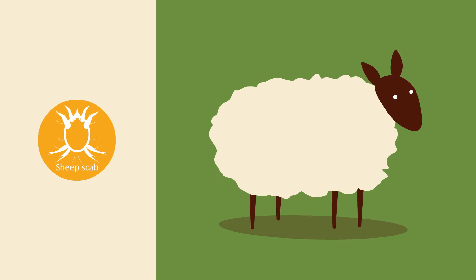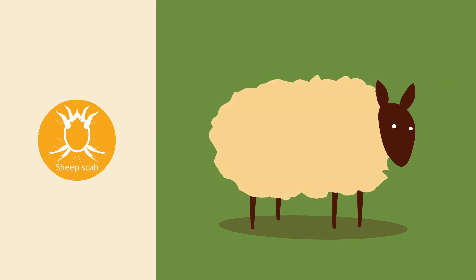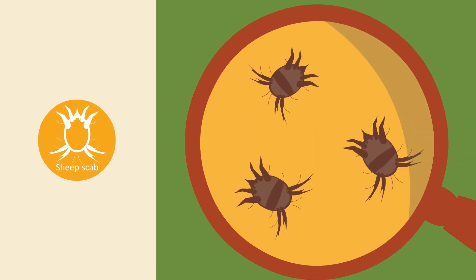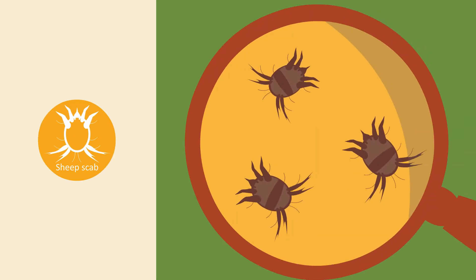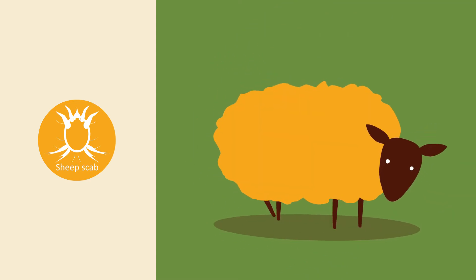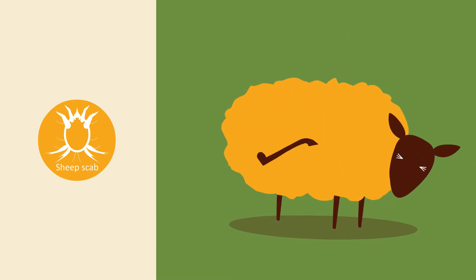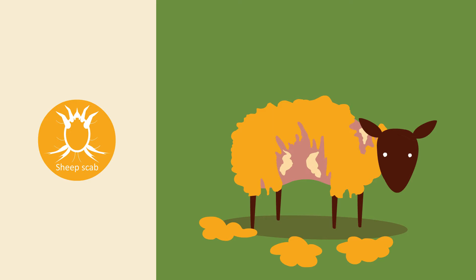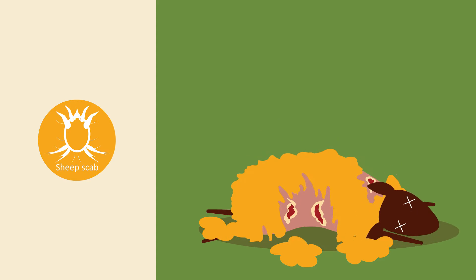Sheep scab is a highly contagious disease caused by the mite Psoroptes ovis, which infests the skin surface causing intense itching, restlessness, wool loss, yellowish scabs, bleeding wounds, loss of production, and in some severe cases, death.